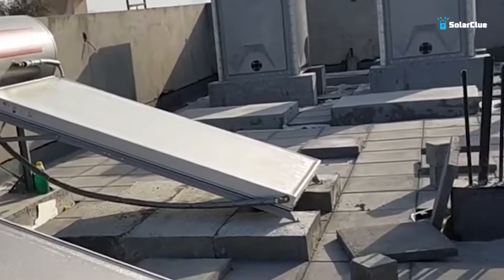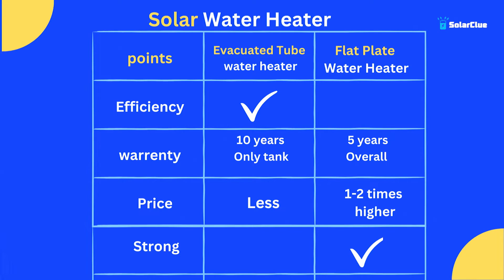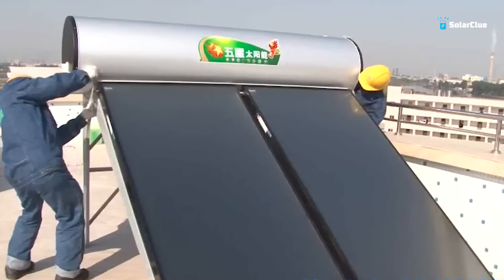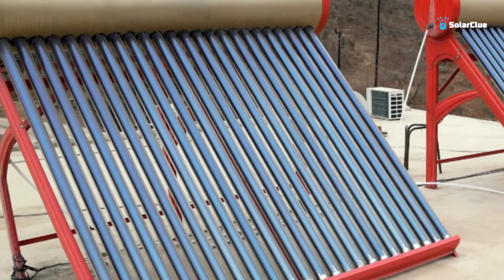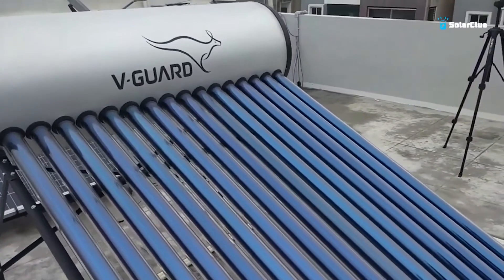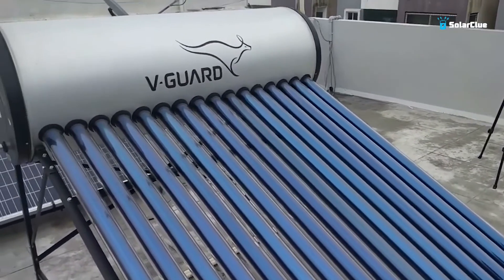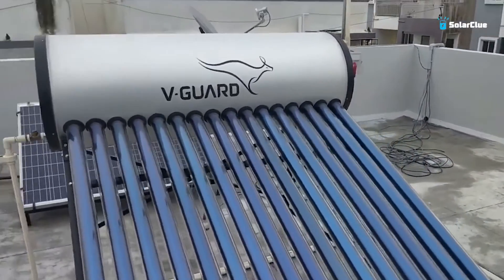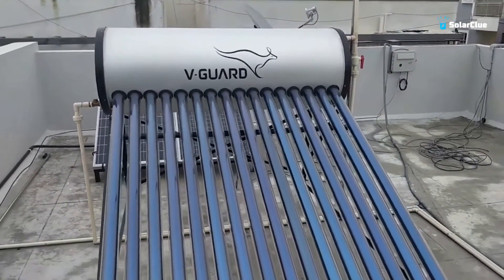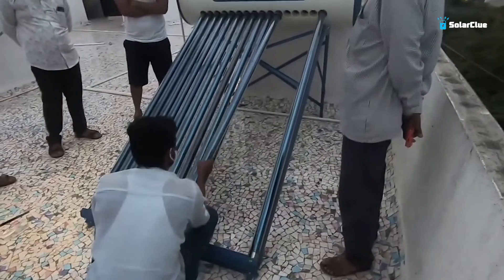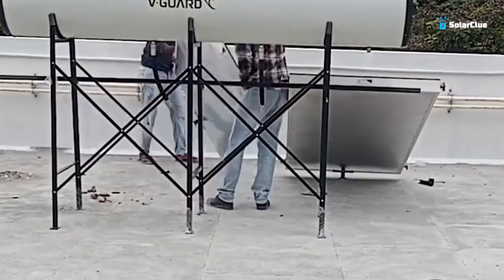Where is the panel model good? First, panel models are physically very strong. For a 200 LPD system, you get two panels, each around 35 kg, with 4mm toughened glass on top — making them nearly unbreakable by accident. In contrast, tubular models have cylindrical glass tubes made of borosilicate glass which are fragile. If children or monkeys are nearby or physical activity occurs on the terrace, tubes may break.